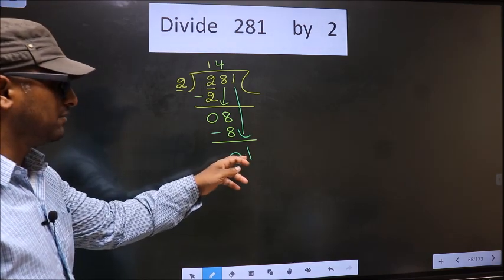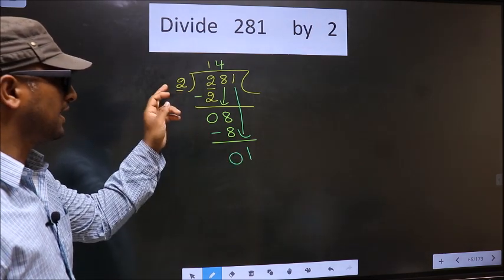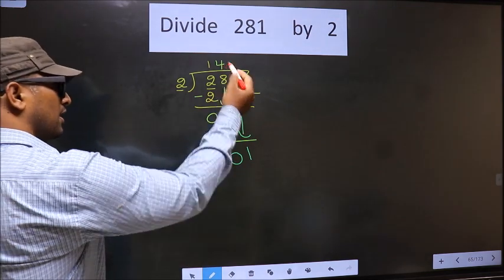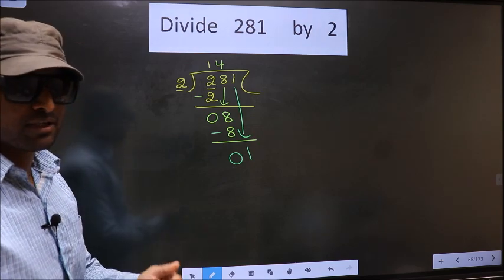Here we have 1. Here 2. 1 is smaller than 2. So, what many do is they put a dot and take 0 here, which is wrong.